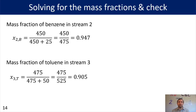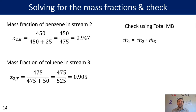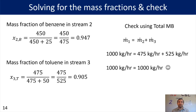Before we call this case closed, we'll use the total material balance as a check. The total material balance is not needed to reduce degrees of freedom, but if the individual benzene and toluene balances worked out, it should also work out. Stream 1 total = stream 2 + stream 3: 1000 kilograms per hour entering = 475 kilograms per hour in the distillate plus 525 kilograms per hour in the bottom stream. That sums to 1000, confirming we've done the material balance correctly.